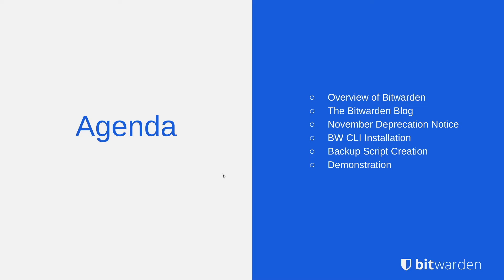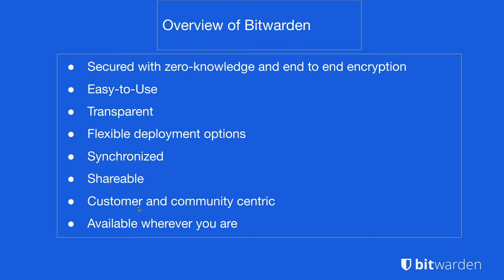A quick summary of our agenda for today: we're going to do a brief overview of Bitwarden for those who aren't familiar, we'll discuss the Bitwarden blog, touch on our November deprecation notice, review how to install the Bitwarden CLI on a Linux system, and go over how to create an automated script for backing up your vault contents.